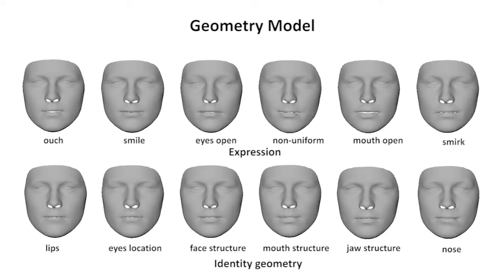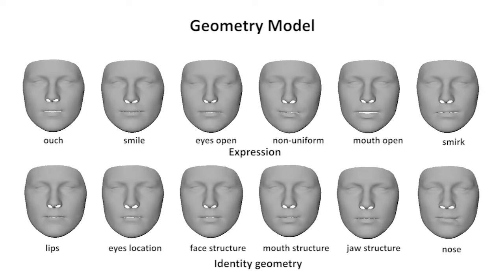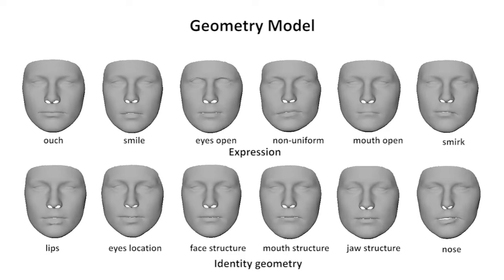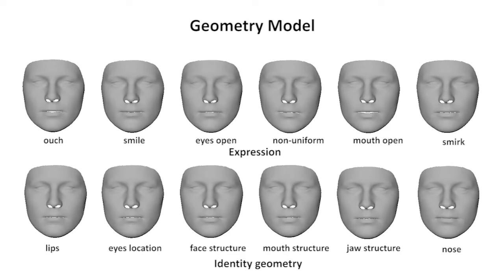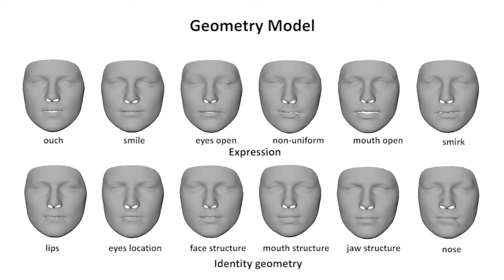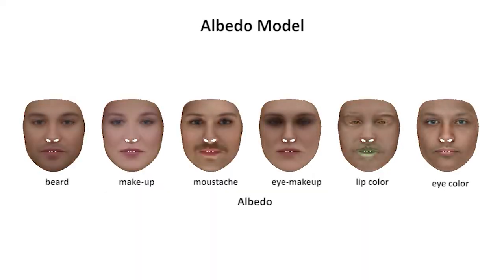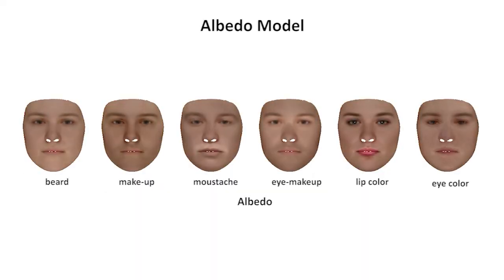The expressions capture various mouth and eye movements. The identity and expression models are well-disentangled from each other. The albedo model captures facial hair, makeup, and eye color.